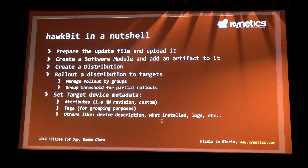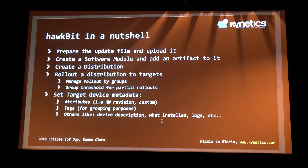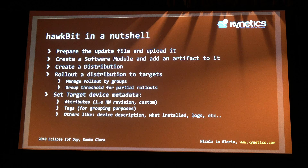So the workflow is: prepare the update file, upload it, create a software module, put an artifact on it, create a distribution. You can also manage rollouts by groups, with threshold-based partial rollouts. If I don't want to roll out to 100% of devices, I can roll out to 20% and see the results first — if something goes wrong, it affects only a small percentage. I can create target metadata like hardware revision, OS revision, local IP, and send back device logs to the CI system to raise alarms if something didn't work properly.